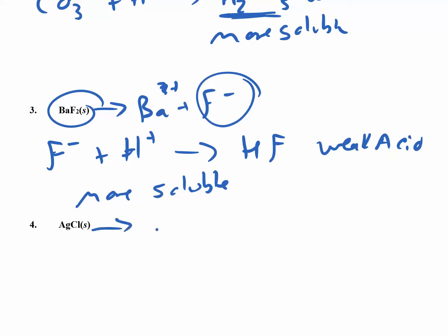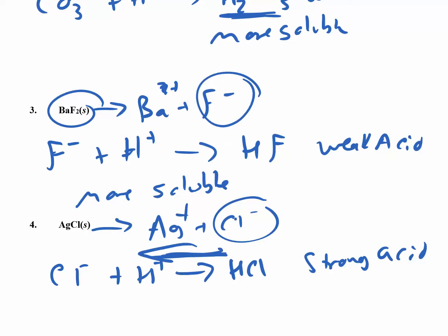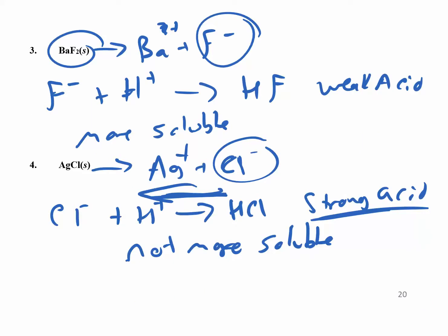Silver chloride dissociates into Ag+ and Cl⁻. When Cl⁻ reacts with H+, you make HCl — which is a strong acid. Strong acids want to dissociate, so the equilibrium doesn't lie in that direction. Chloride ions and H+ would rather stay apart, so silver chloride will NOT be more soluble under acidic conditions. The rule: if you make water or a weak acid, solubility increases; if you make a strong acid, it does not.